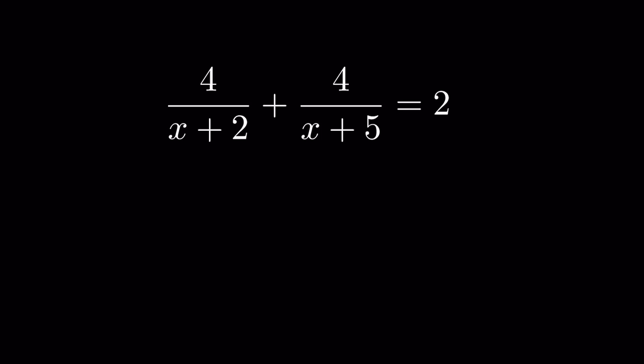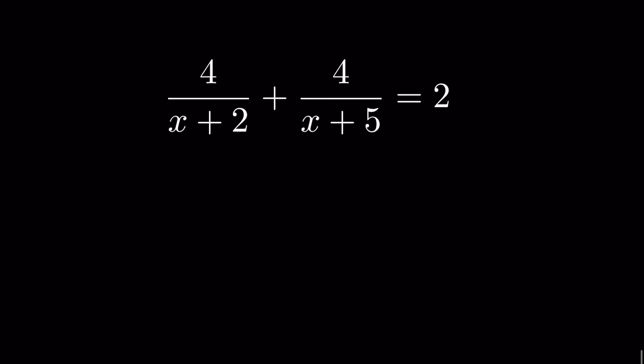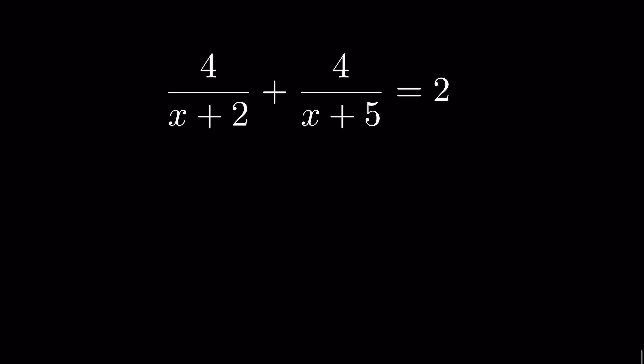The problem is: 4 upon (x+2) plus 4 upon (x+5) is equal to 2. How do we add algebraic fractions? Algebraic fractions means there is a variable in the fraction.